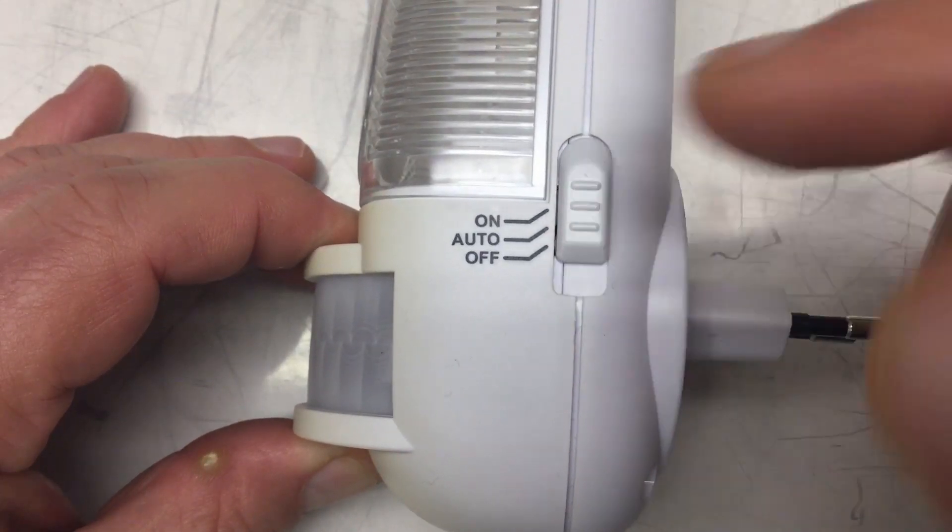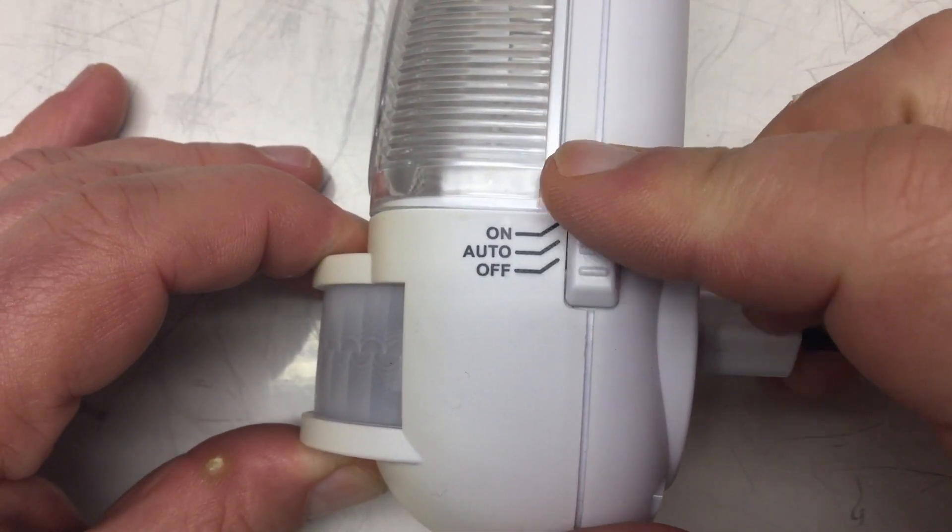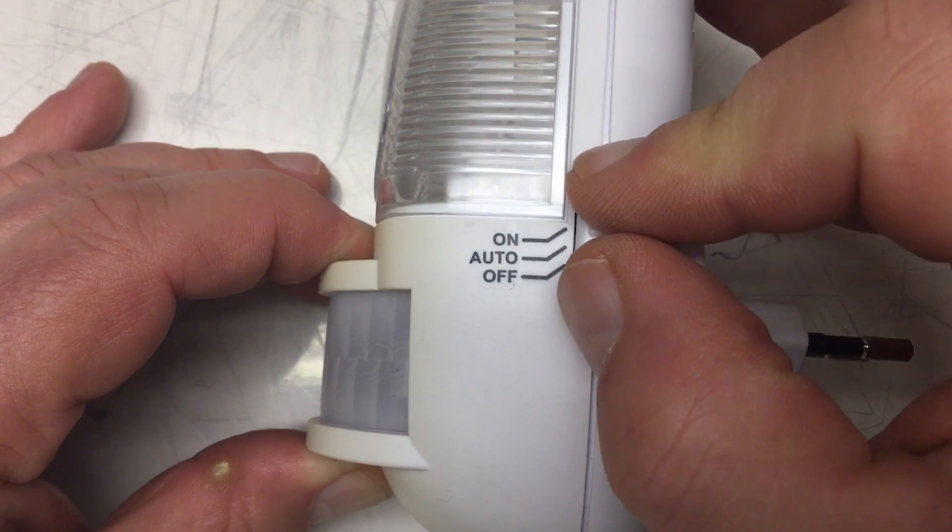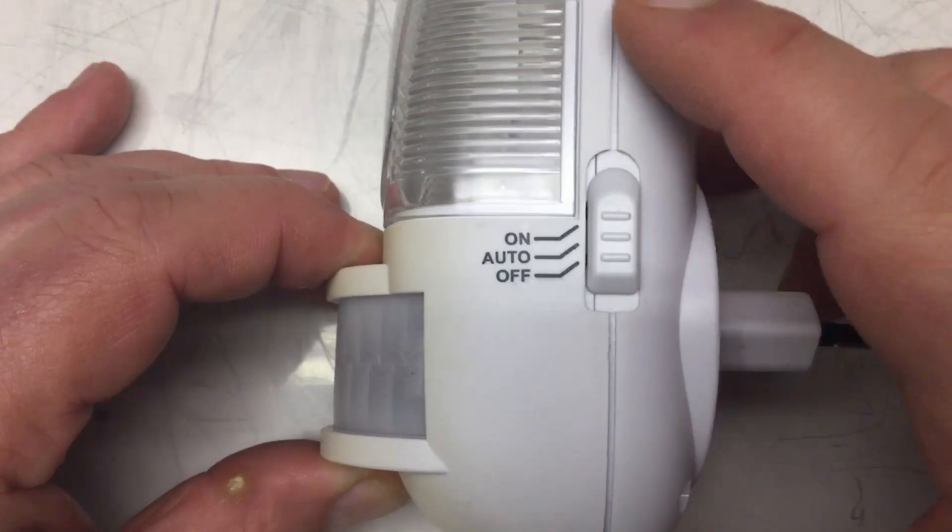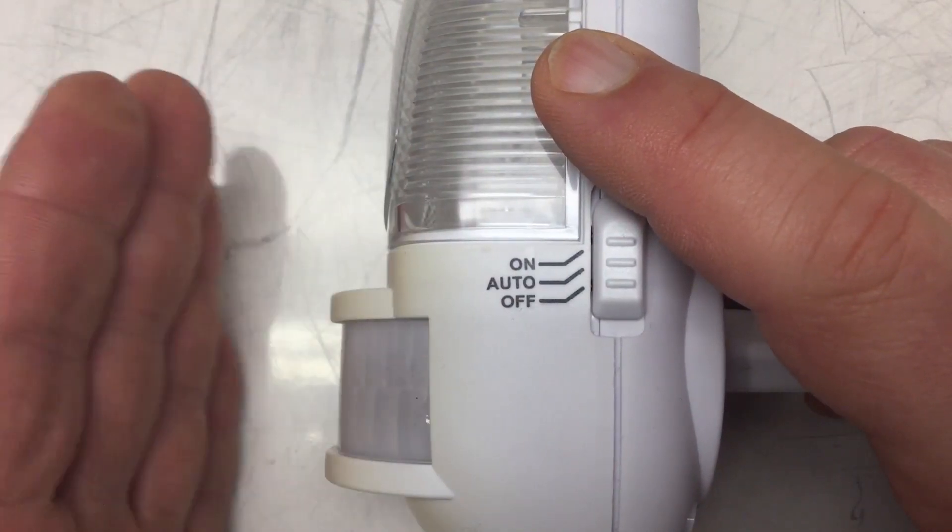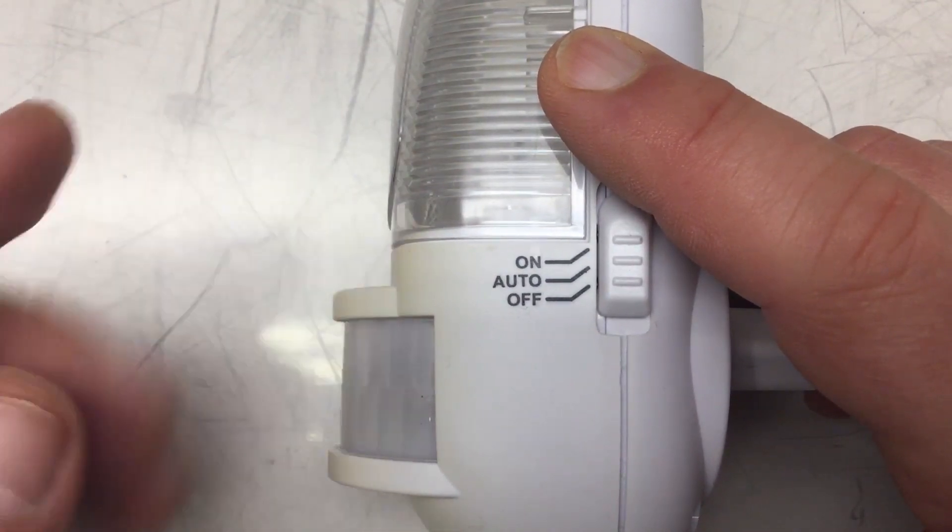And that is on, then it will be on and off. Then it's off and auto. And on auto, it only should light up when it is dark and there is some motion.